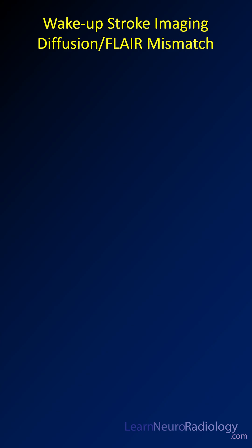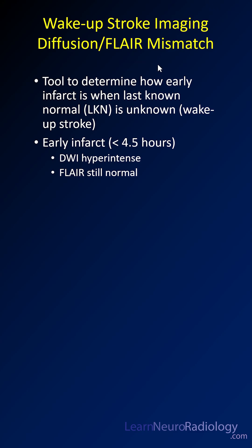You can use a concept called diffusion-FLAIR mismatch to try to help you determine if the symptom onset is within the last couple of hours. This is a tool to determine when a patient may have been last known normal, and we're trying to determine if the patient is still in that early window — less than four and a half hours or so.